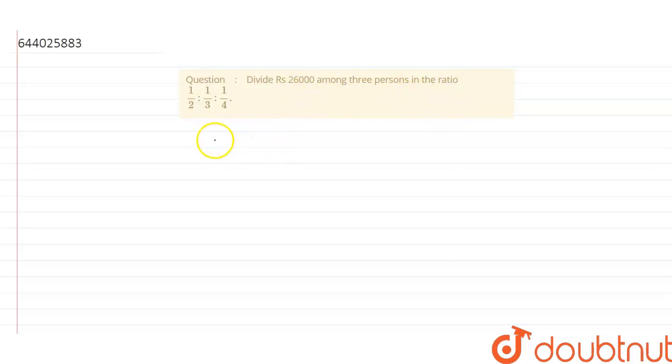Okay, so let the share of each person be 1 upon 2x, 1 upon 3x and 1 upon 4x.